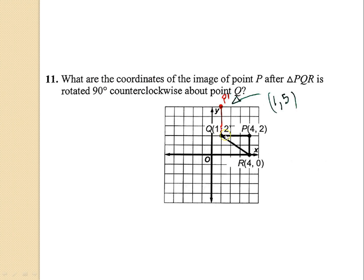Number eleven: I'm rotating QP around point Q, going 90 degrees counterclockwise — going against the clock as you see my arrow moving on the screen. This line is going straight out to the right, which means that if it's rotated 90 degrees, P is going to be rotated this way, so it's now pointing up. This line is three boxes long, so I draw a line three boxes long directly up. That gives me this point right here, which is one comma positive five. One five is the coordinates of P prime. Make sure this is on your paper and drawn in your graph. Check the partners next to you and in front of you, and pause the video.